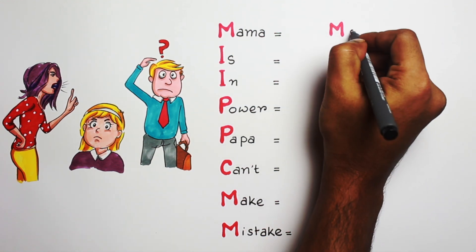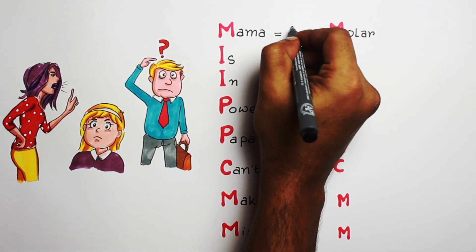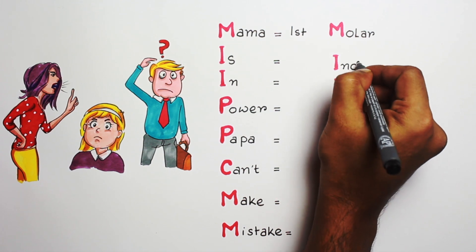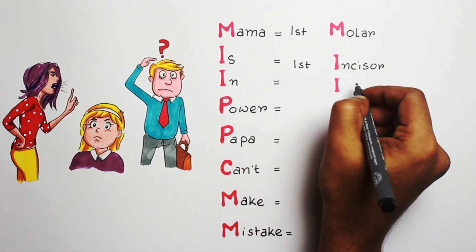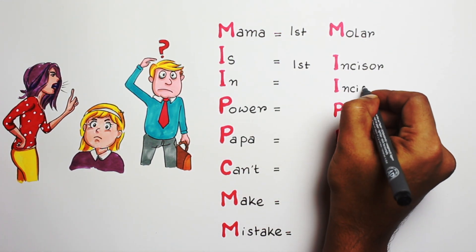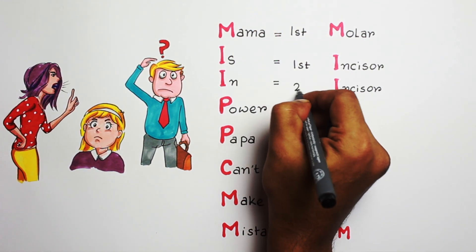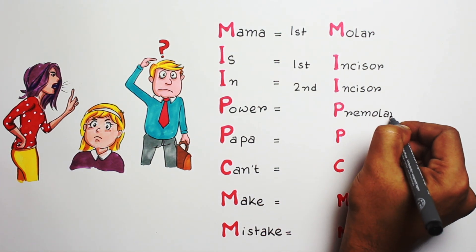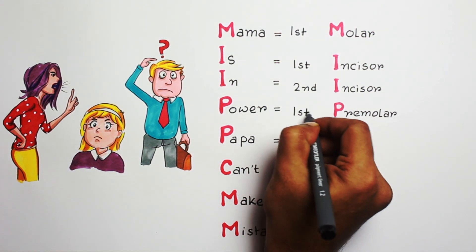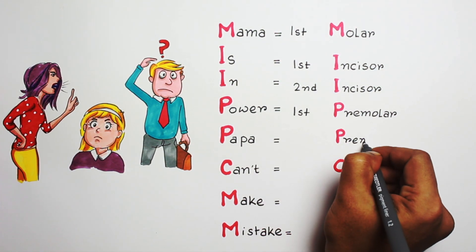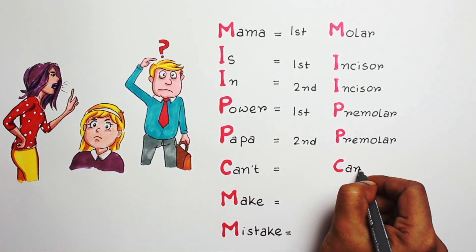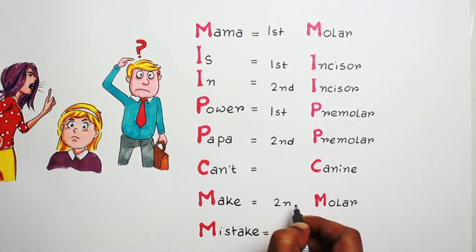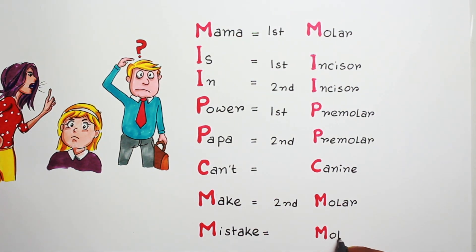So one by one: the first one is the first molar, second one is the first incisor, and automatically the next incisor will be the second incisor. Then first premolar, second premolar, canine, then second molar, and lastly third molar.